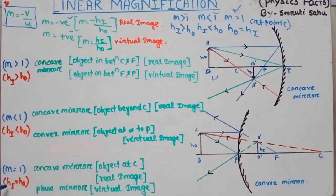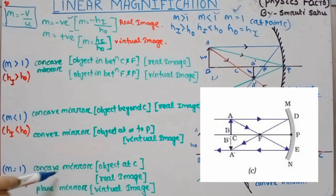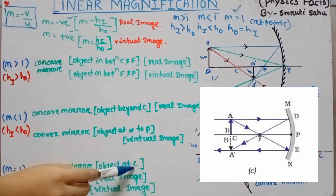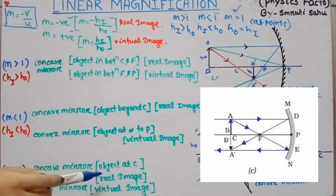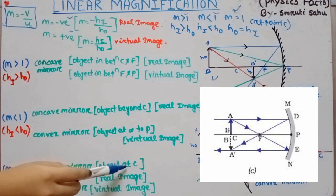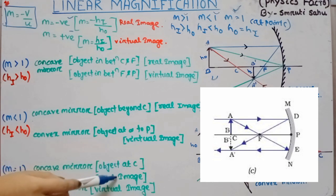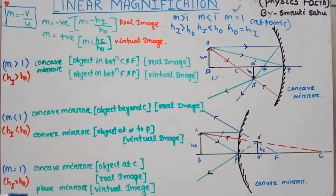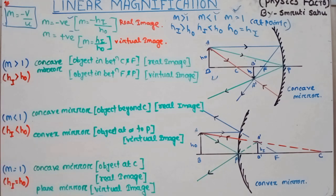Magnification equal to 1 means HI equals HO. In case of a concave mirror with the object at C, the height of the image equals the height of the object and a real image is produced. Whereas in case of a plane mirror, the height of the image is also equal to the height of the object, but that image is a virtual one. Remember this table for your objective-type questions.